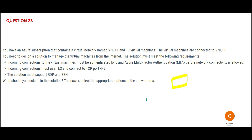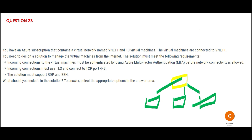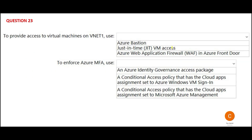You have a subscription that has one VNet — this yellow box — and there are 10 VMs present which connect via VNet one. You want to manage these 10 virtual machines using the internet. The solution should meet the following requirements: MFA is important, the connection should be made on port 443 using TLS, and the solution must support RDP and SSH.